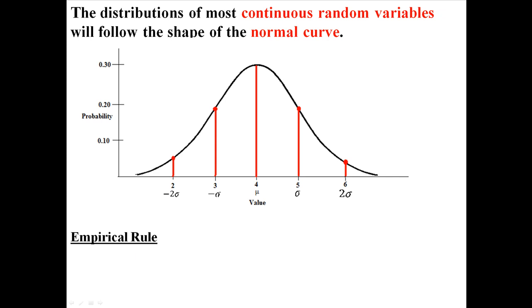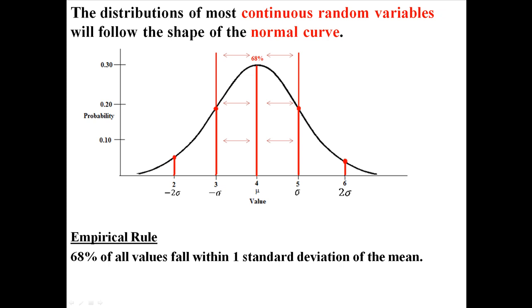So now, the empirical rule. The empirical rule states that 68% of all the values in your distribution will fall within one standard deviation of the mean. So for this distribution, you would expect 68% of all the values to be between 3 and 5.